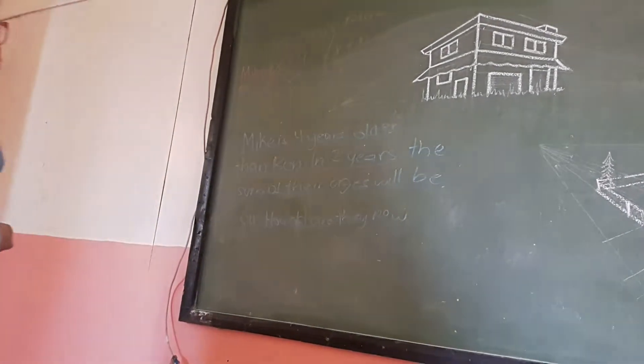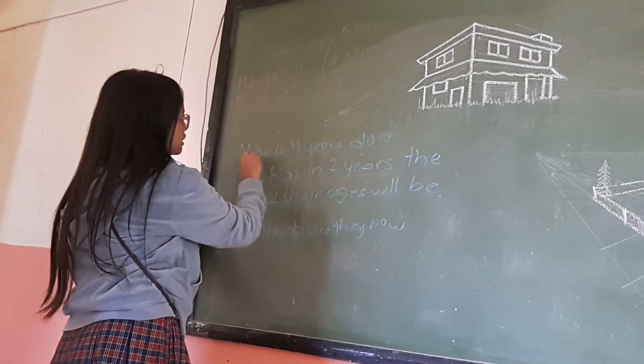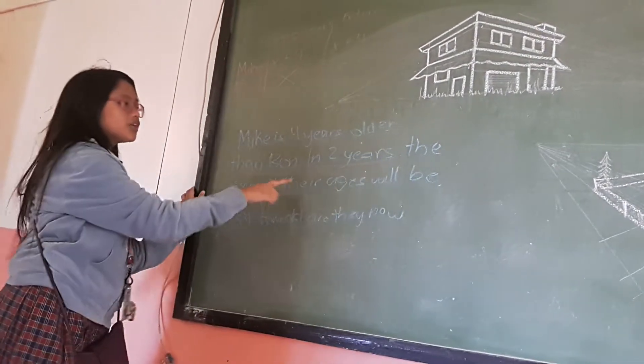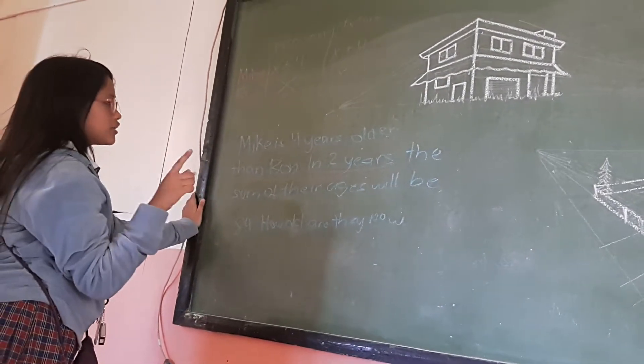Now, here's an example problem. Mike is four years older than Ron. In two years, the sum of their ages will be 84. How old are they now?